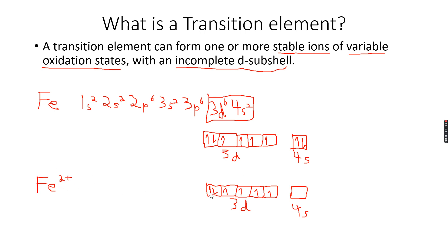We have an incomplete d subshell because we can still fill four electrons over here. It's not completely filled—we can have a maximum of 10 electrons in this entire subshell but we have only six, so it's partially filled. Therefore this completes the definition of a transition element.